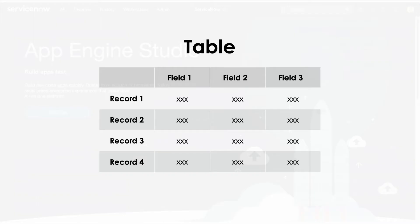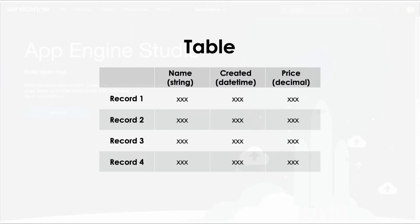Another important thing to know is that when we define the fields or columns in a database table, we have to specify the type of data that will be stored in that field — we call that the data type. The underlying database management system defines which data types we can choose from. As an example, a field for storing a name would probably be defined with a string data type, which allows storing a combination of letters, numbers, and special characters. A field storing a created date would probably have a date-time data type, and a field storing a price would probably have some numeric data type, like a decimal.